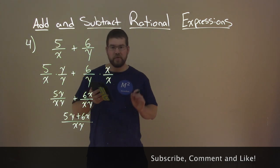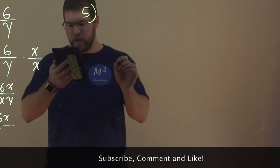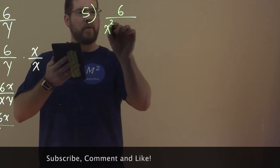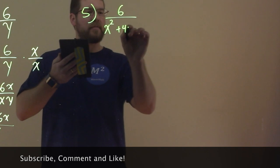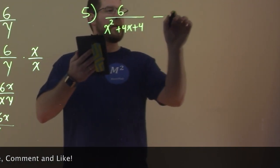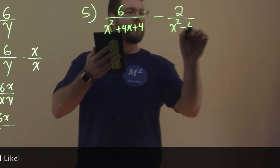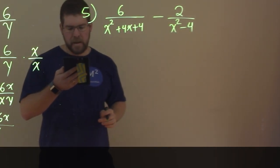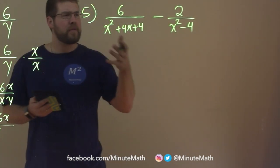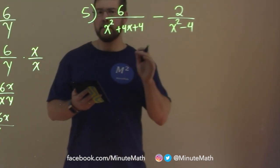So now let's learn how to subtract. Let's do another example. Number 5 here. We have 6 over x squared plus 4x plus 4 minus 2 over x squared minus 4. So this is the same concept as before, but it's a little harder, and we're subtracting. But we still have to find a common denominator here.